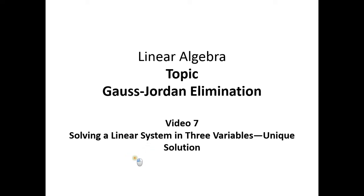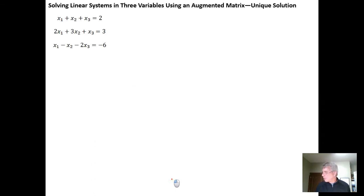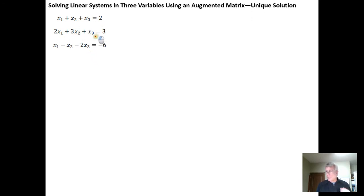In this video we're going to solve a linear system of equations in three variables where we have a unique solution. The idea is to take your system and, just like we did with the system in two variables, first put it into matrix form. We have variables x sub 1, x sub 2, and x sub 3.